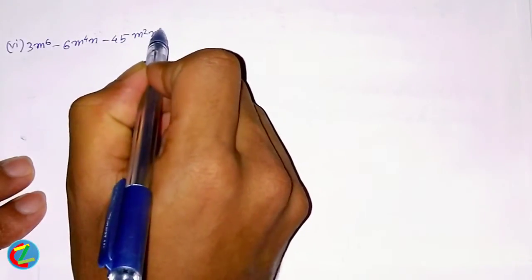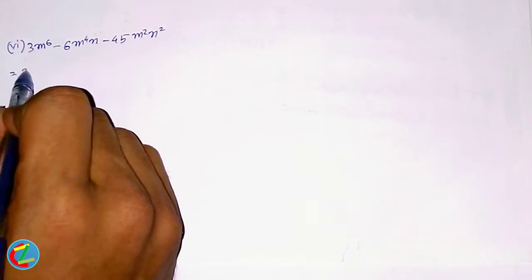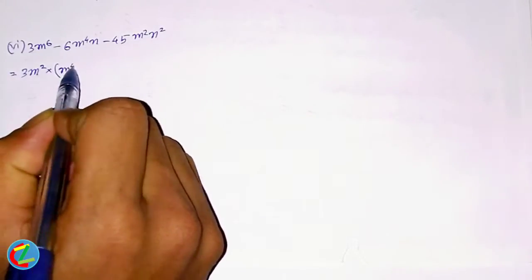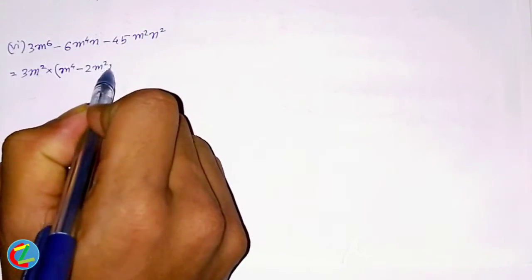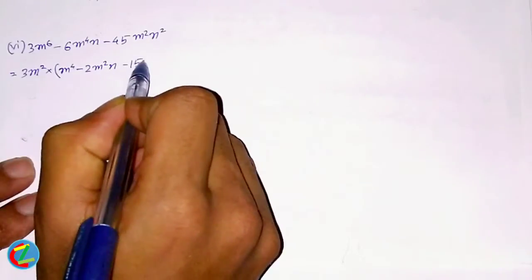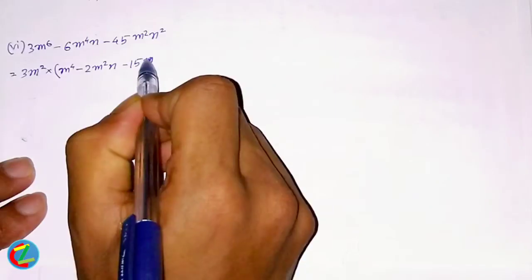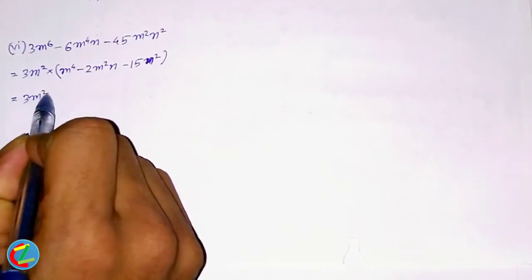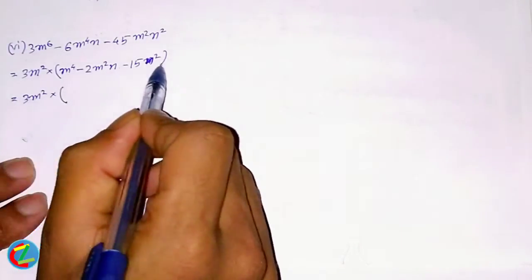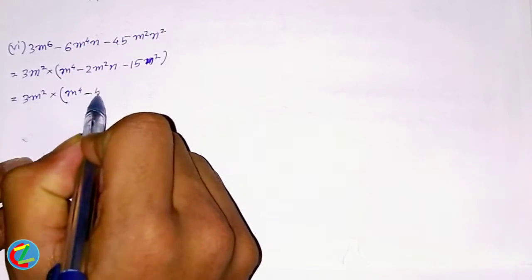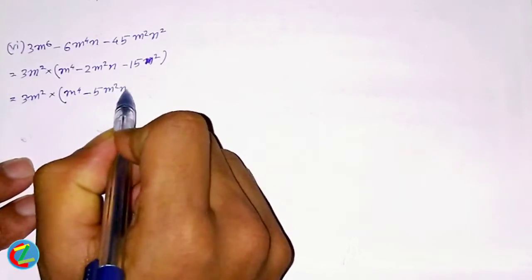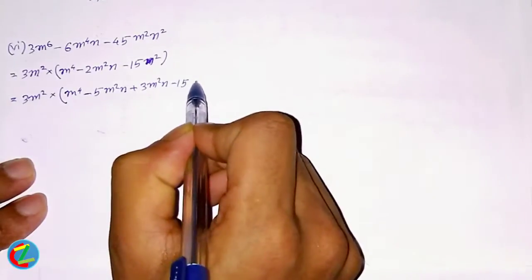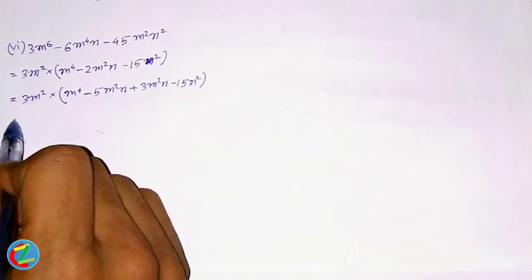The next problem: m squared — 6m squared per 4 minus 45m squared. Now the help is the 2M squared. You can create 2M squared, so that means 3M squared. The first step will fold this sign: 5m squared n plus 2m squared n. This will fold into the second step.